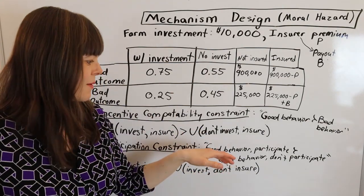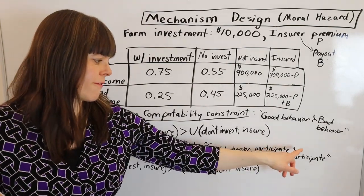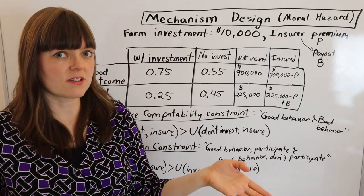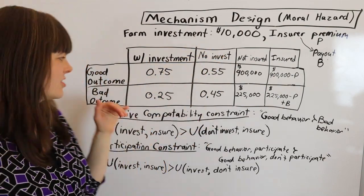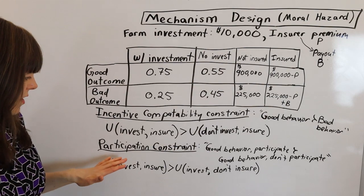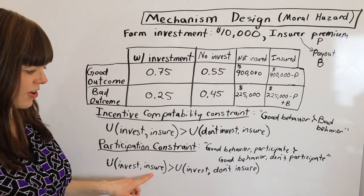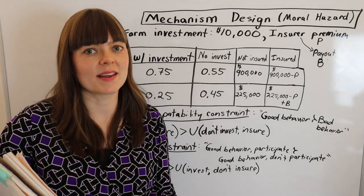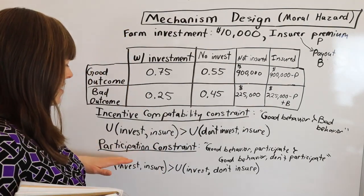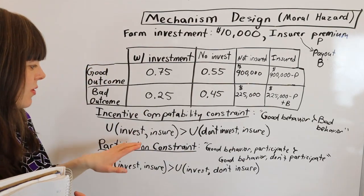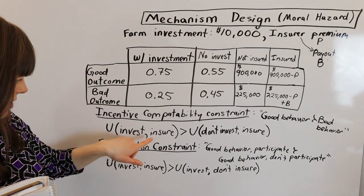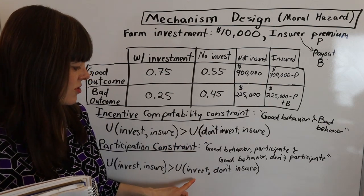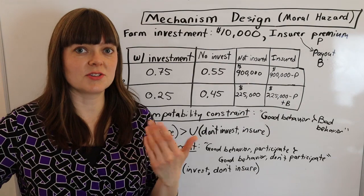The participation constraint ensures the farmer chooses to buy insurance. We want the utility of the package we're trying to force — good behavior and participating — to be preferred to good behavior and not participating. We know that if the farmer is uninsured, they will definitely choose to invest in the technology. So the participation constraint is: utility of investing and insuring must be greater than or equal to the utility of investing and not insuring. So now we need to set up these three utility functions.